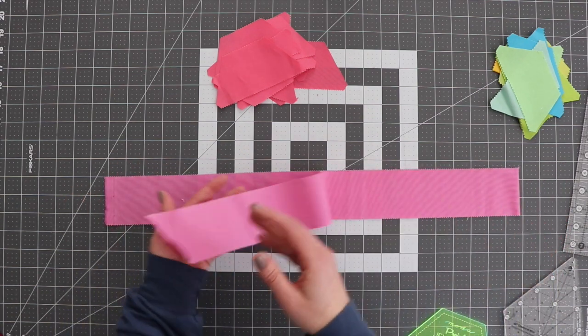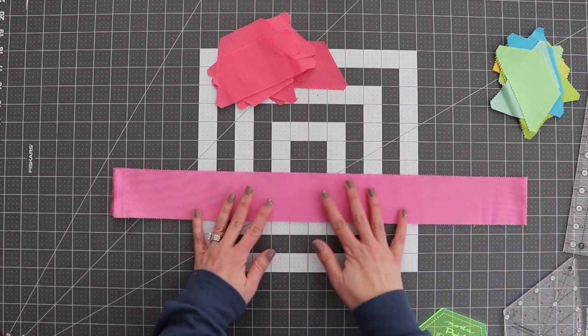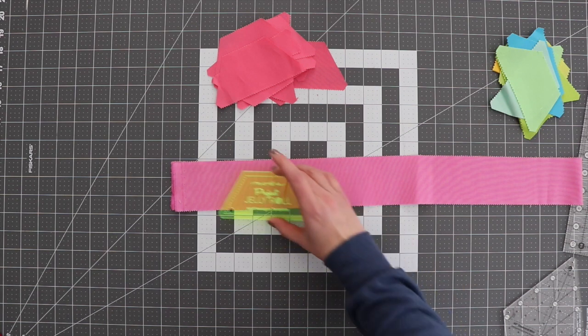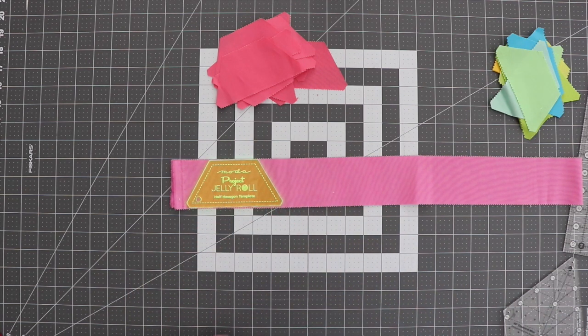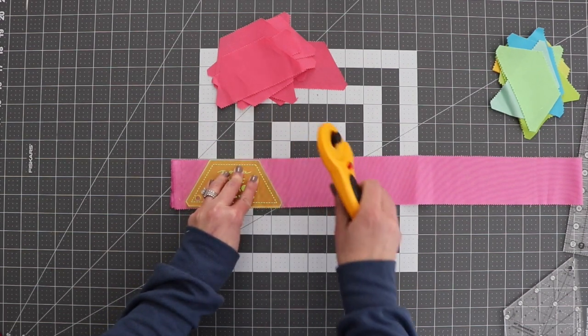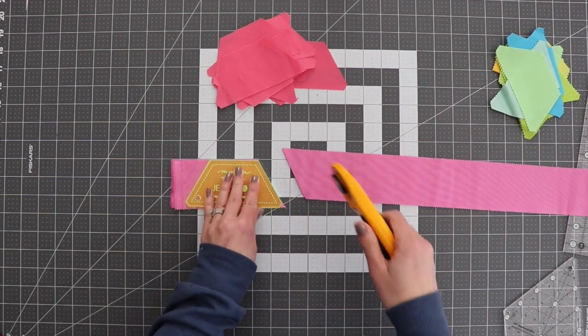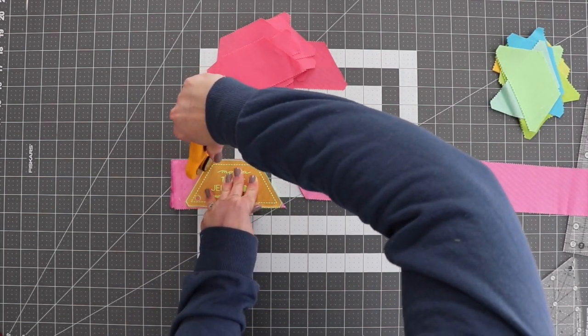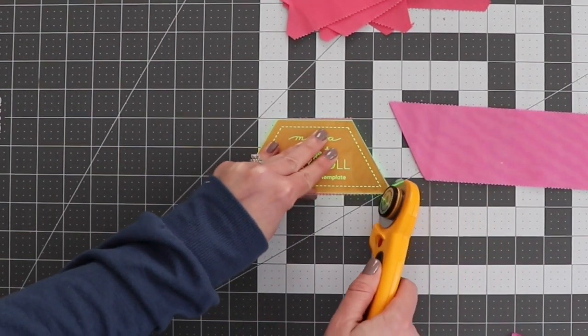All right, to get started I've got one of my jelly roll strips here and I'm keeping the fold in it because I'm going to cut two of these at a time. I'm going to leave my template on here and I'm just going to cut on one side and cut the other. I want to make sure that I'm cutting these little dog ears off. That's going to help when I sew these together.